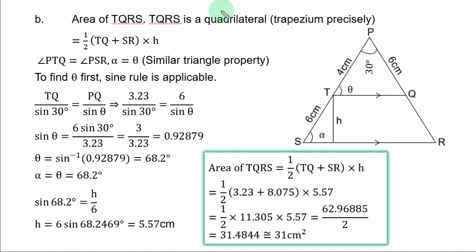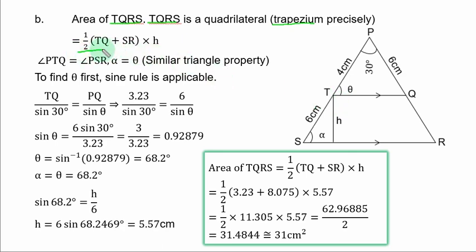For the height of the trapezium: in the right-angle triangle, height h is opposite, hypotenuse is TS = 6. So sin alpha = h/6, giving h = 6 × sin 68.2° = 5.57 cm. Area = ½ × (TQ + SR) × h = ½ × (3.23 + 8) × 5.57 = ½ × 11.23 × 5.57 = 31.28 ≈ 31 square centimetres.